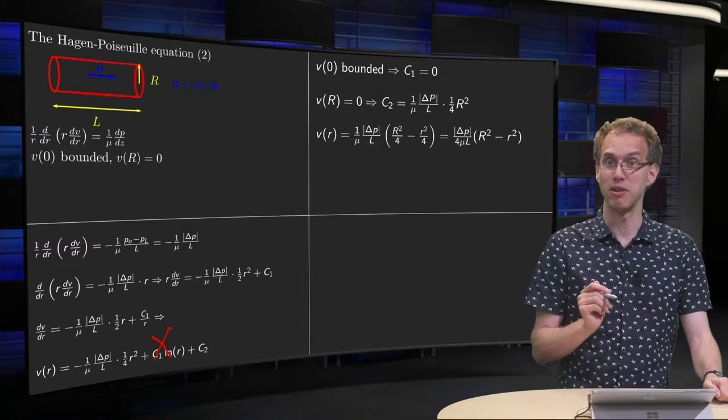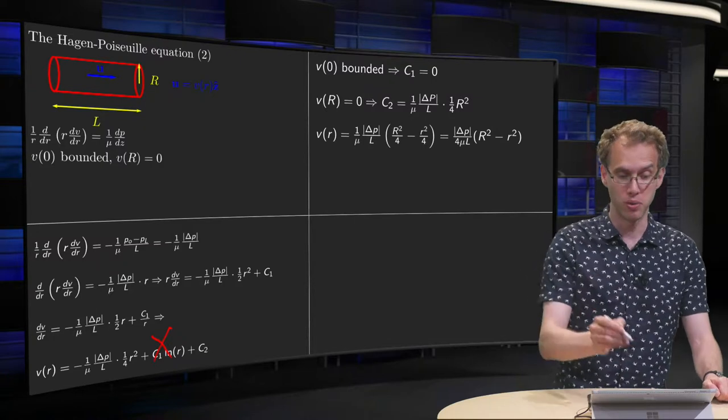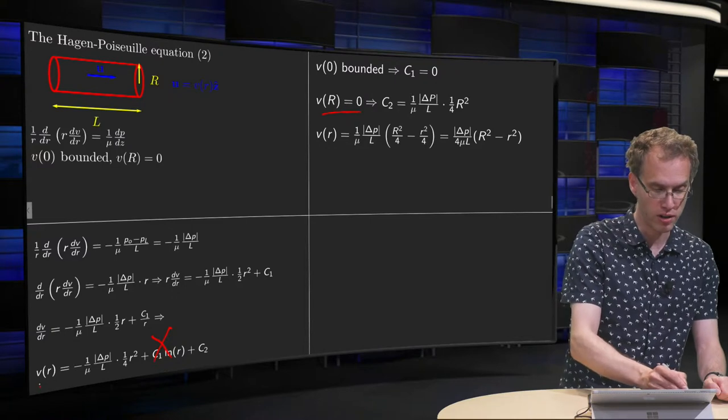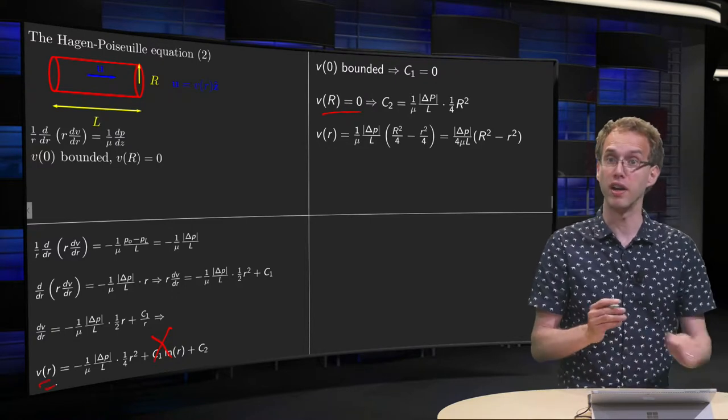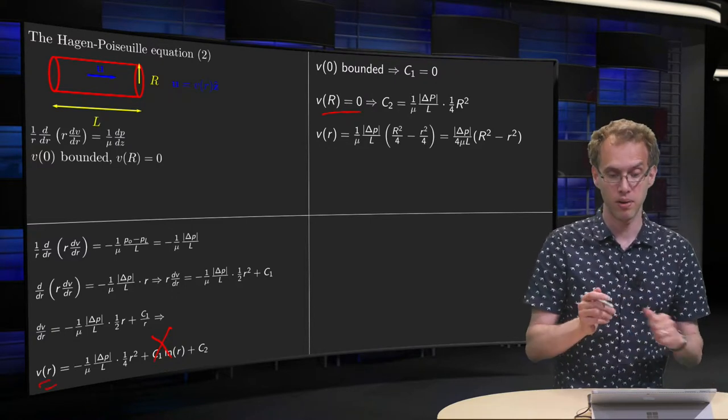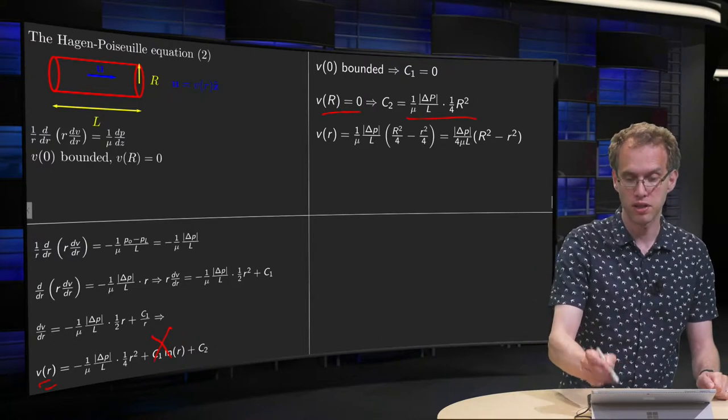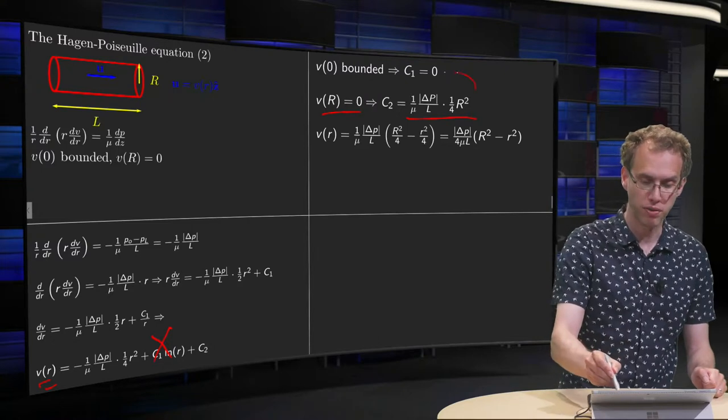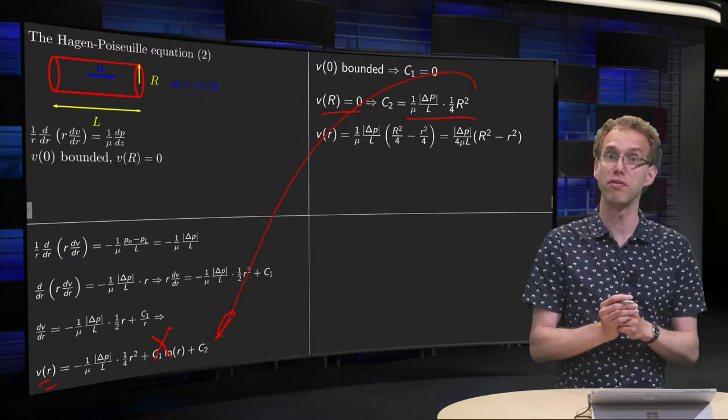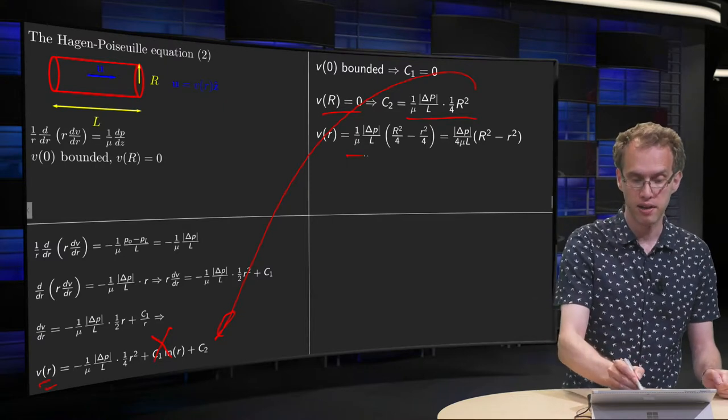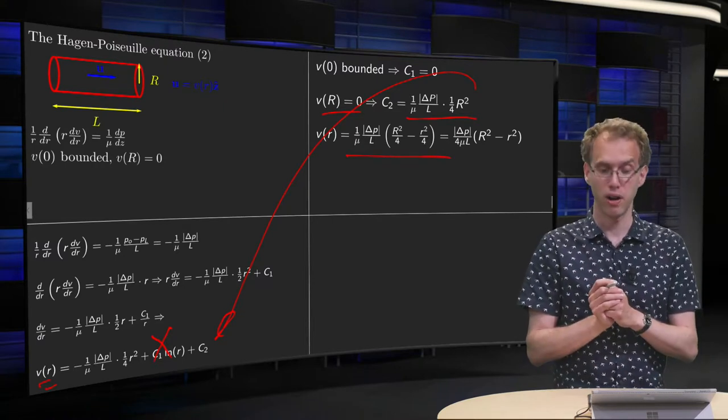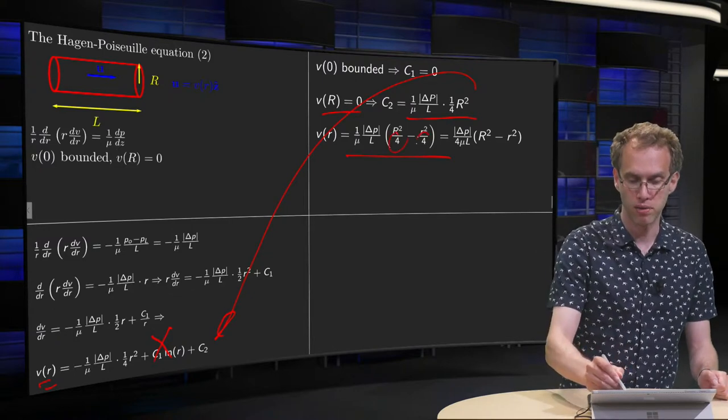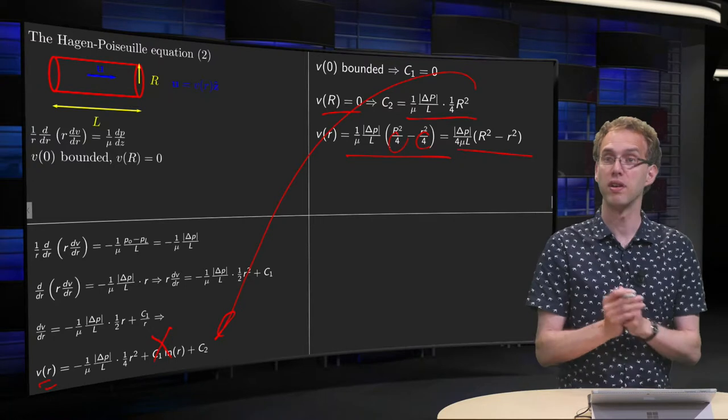And then we can use our second boundary condition to determine C2. V at R equals 0, so if we plug in small r equals capital R, we want to get 0, so that means that C2 has to be this expression. Plug the expression for C2 into the general expression for V of r, and you can take the factor 1 over 4 mu out, and then we have the expression.